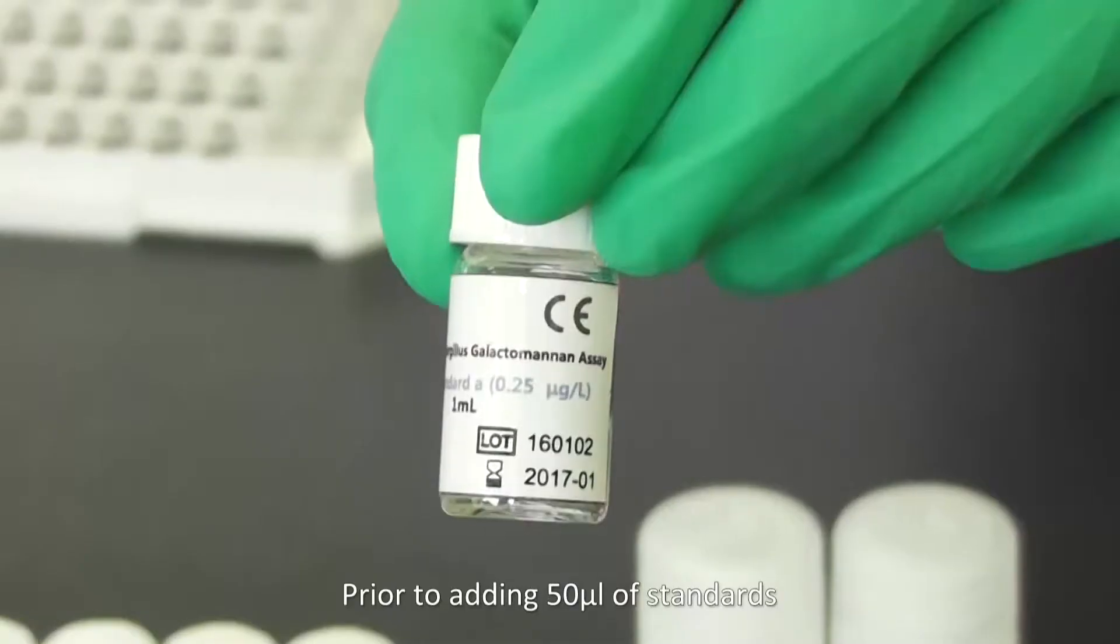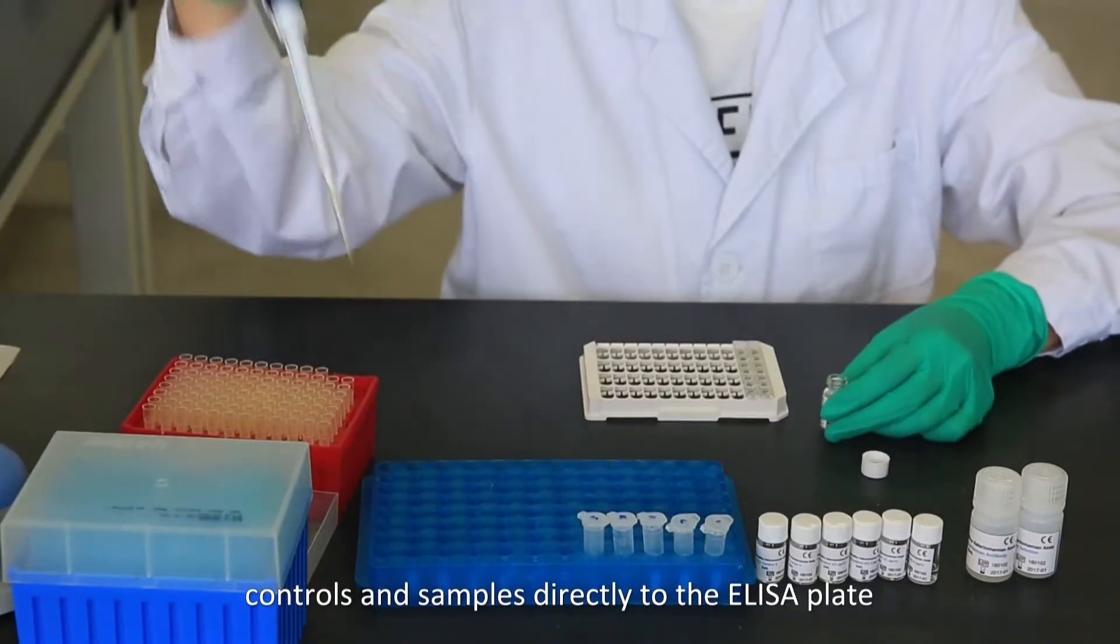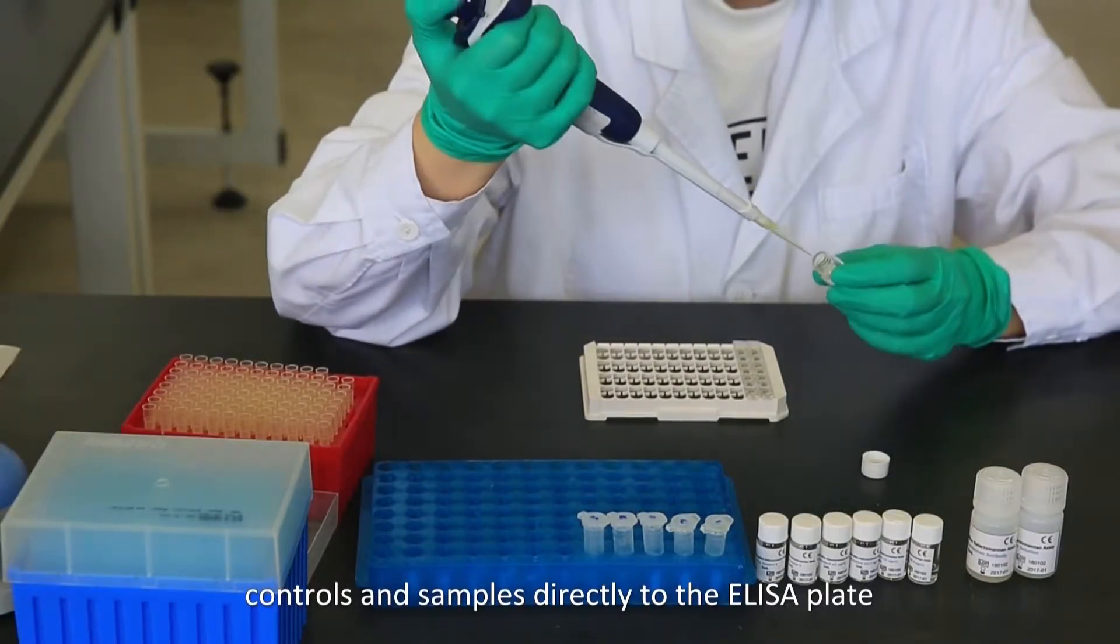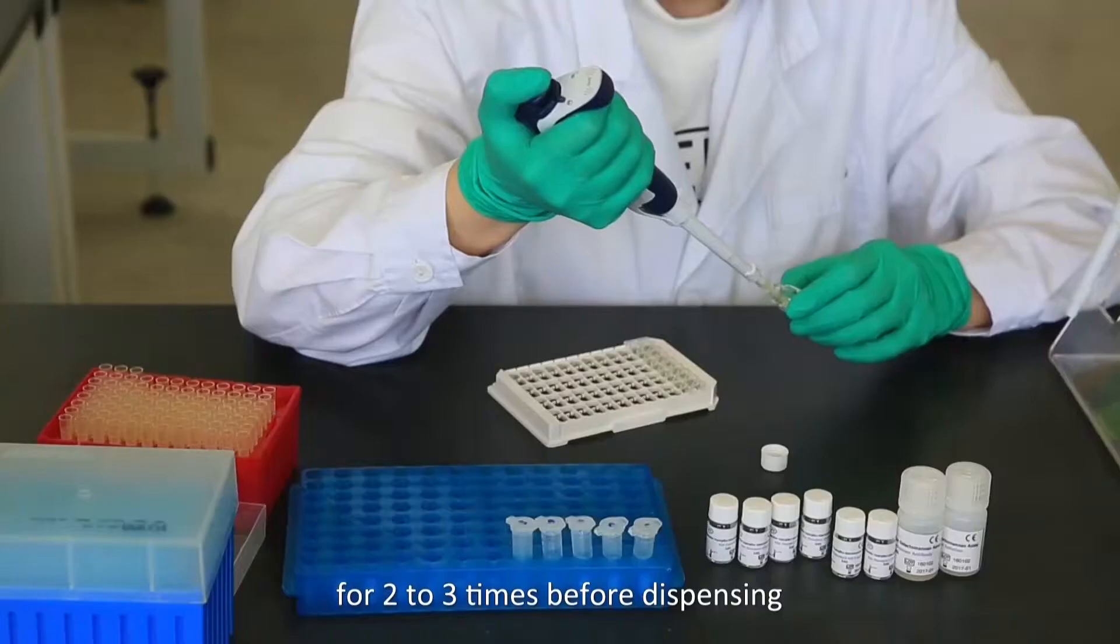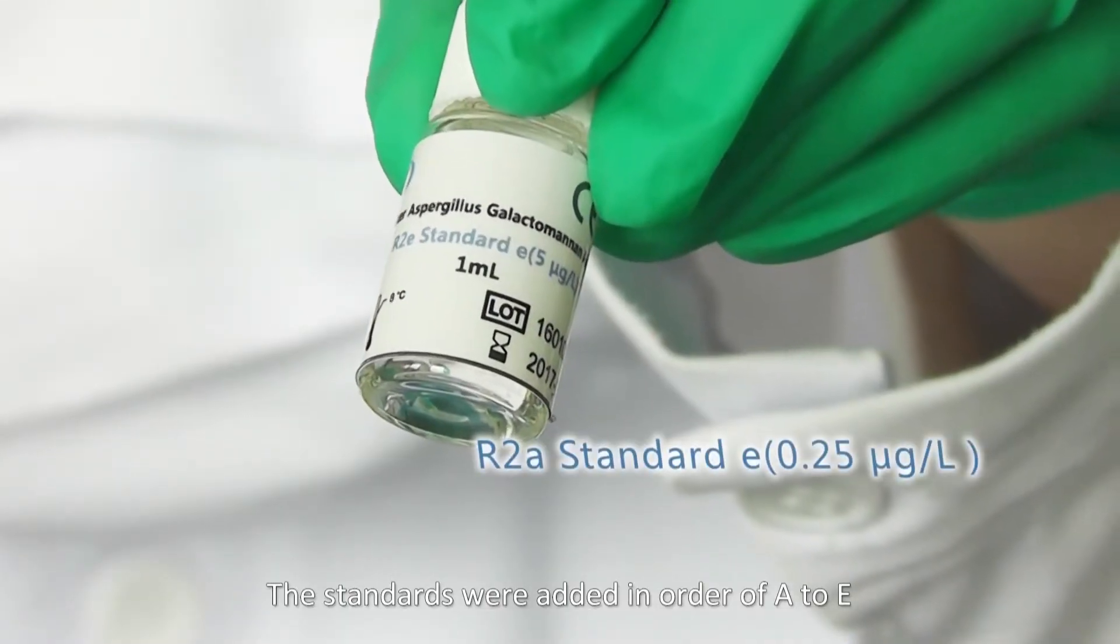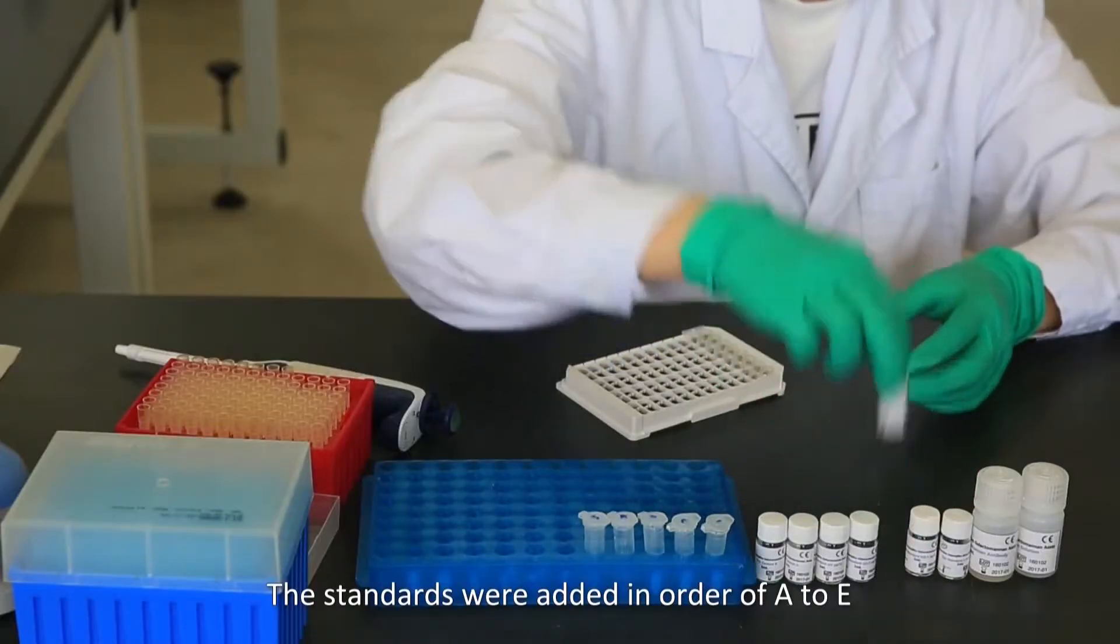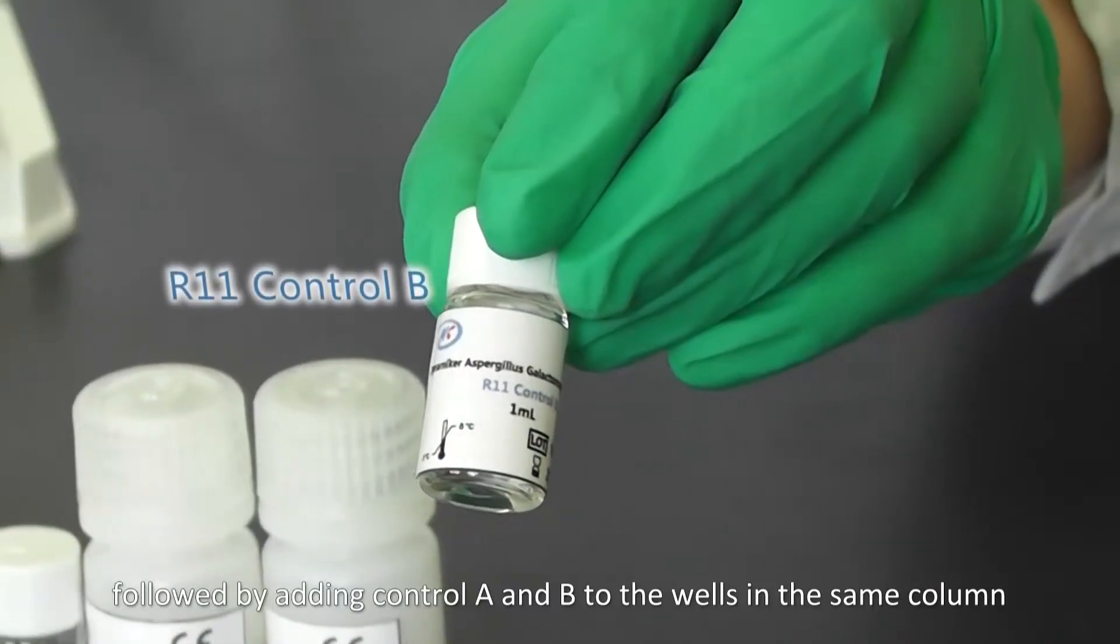Prior to adding 50 microliters of standard controls or samples directly to the ELISA plate, rinse the pipette tips with the corresponding reagents for 2-3 times before dispensing. The standards were added in order of A to E, followed by adding control A and B to the wells in the same column.